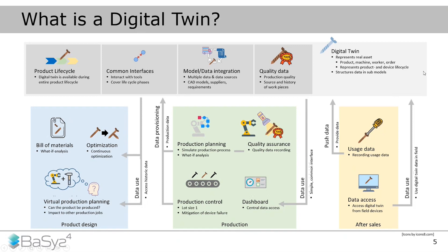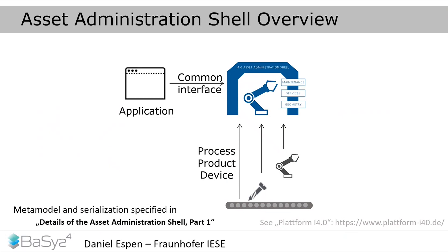If you change something in the digital twin, you automatically also get the changes back into reality. That is basically a digital twin. In BaSyx we often talk not just about the digital twin but also about the Asset Administration Shell. The Asset Administration Shell is basically a digital twin but in a standardized way. If a company claims to have a digital twin, that could be implemented in many ways — but with the Asset Administration Shell you know exactly what you get, with a defined meta-model and description of the data and operations.